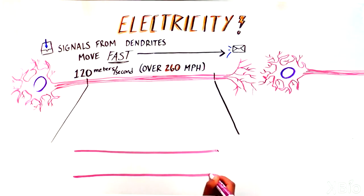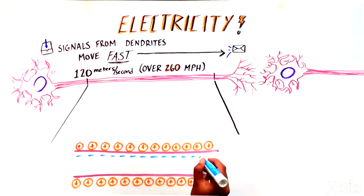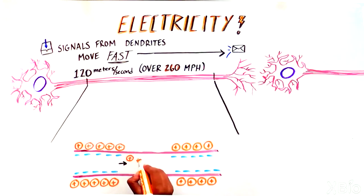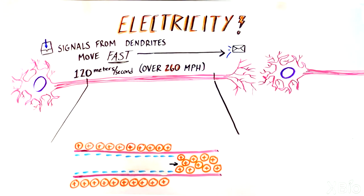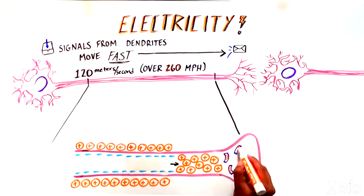These signals are created by the movement of ions, a type of atom that carries an electrical charge across the cell membrane. This movement changes the electrical charge on the inside of the cell versus the outside of the cell, resulting in an electrical signal called an action potential. When an action potential reaches the end of an axon, it triggers the activation of electrically sensitive proteins.